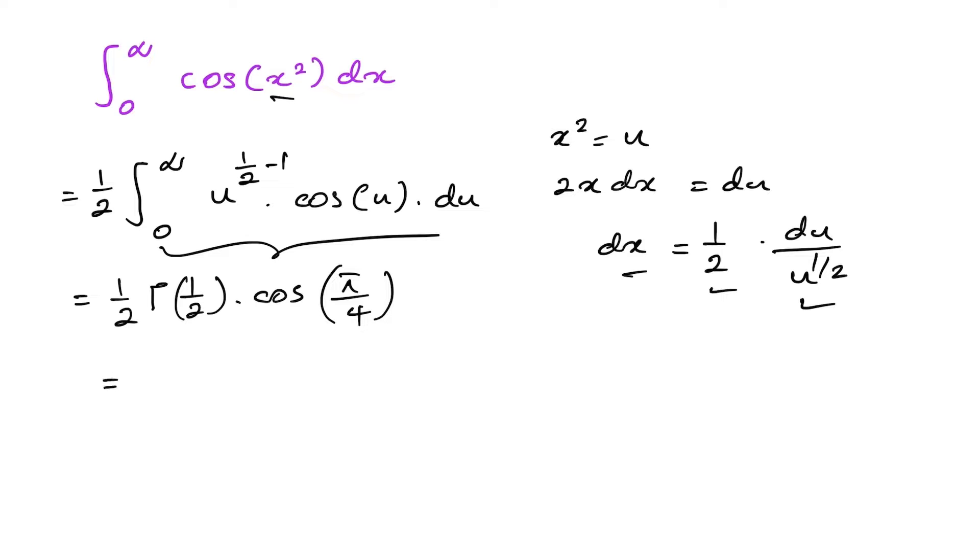So if we simplify, we have one-half. Gamma of one-half, we know, is square root of pi. Cosine of pi over four, we know, is one over square root of two. So we have square root of pi over 2 times square root of 2. Okay, this is the answer.